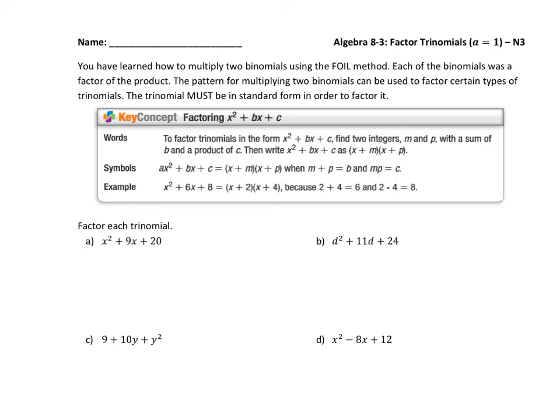Remember that means that our variables, the degree of the terms, must be in descending order. Factor each trinomial. So to factor trinomials in the form x squared plus bx plus c, find two integers, we'll say m and p, with a sum of b and a product of c. So there's a lot of symbols here, I'm just going to show you the process and hopefully we'll get it from that.